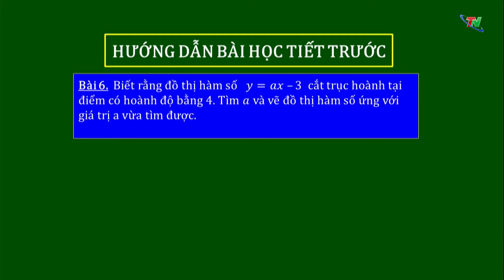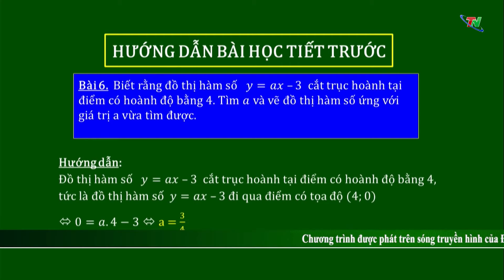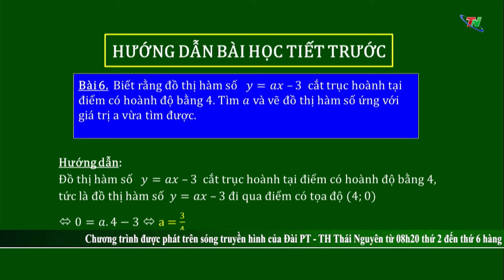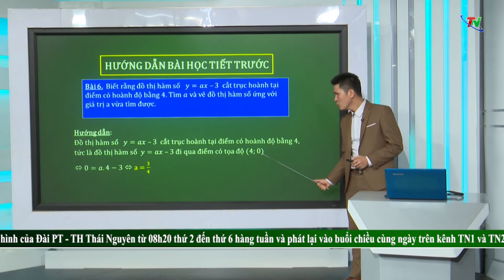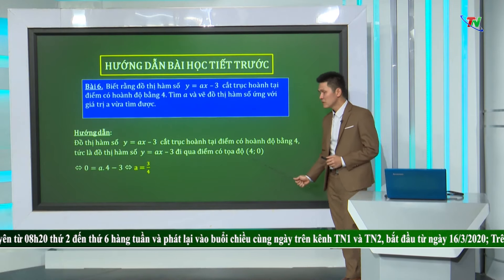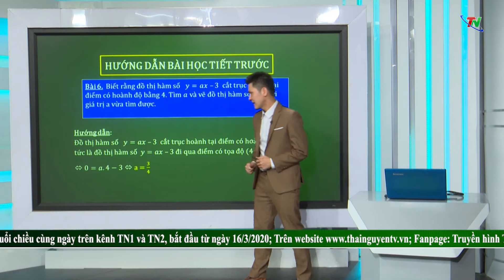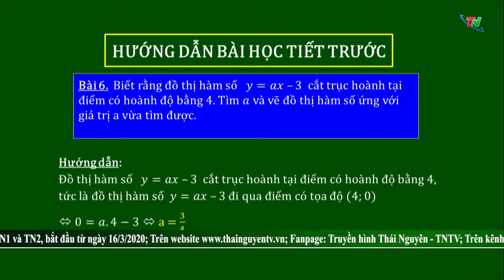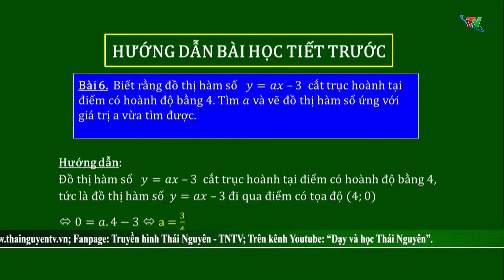Ở bài tập số 6, yêu cầu tìm A và vẽ đồ thị hàm số ứng với giá trị A vừa tìm được. Để tìm A, ta cần xác định cặp giá trị tương ứng (X, Y). Đồ thị hàm số Y bằng AX cộng 3 cắt trục hoành tại điểm có hoành độ bằng 4. Thay cặp giá trị X bằng 4, Y bằng 0 vào hàm số ta được 0 bằng A nhân 4 cộng 3, tương đương A bằng 3 phần 4. Với A bằng 3 phần 4, ta có hàm số Y bằng 3 phần 4 X cộng 3. Các em sẽ tự vẽ đồ thị hàm số này.